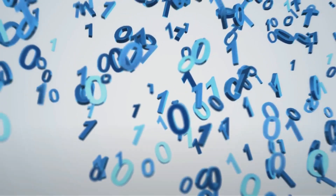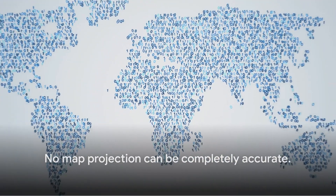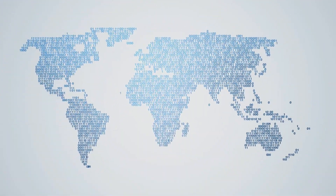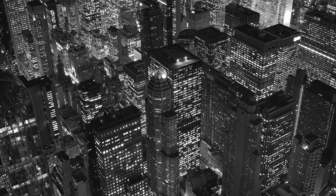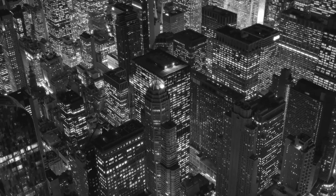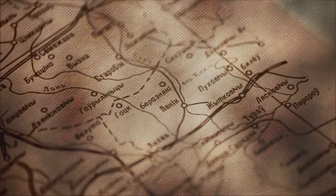However, it's important to remember that no map projection can be completely accurate, and the Robinson is no exception. There is distortion around the poles and edges, causing these areas to appear smaller than they actually are. Additionally, distances aren't represented accurately, especially across the oceans. So, the Robinson projection, while not perfect, offers a more balanced view of the world.